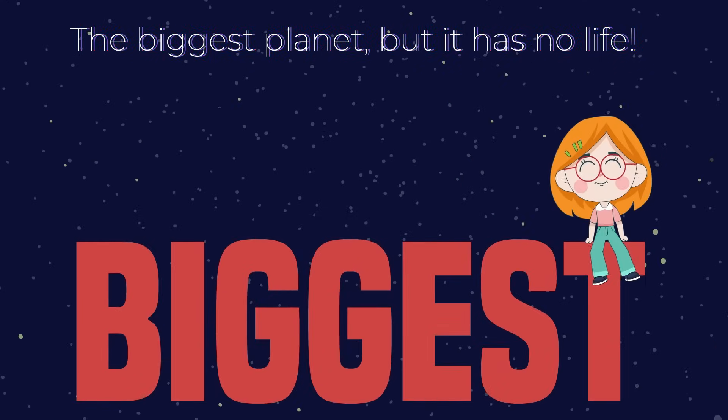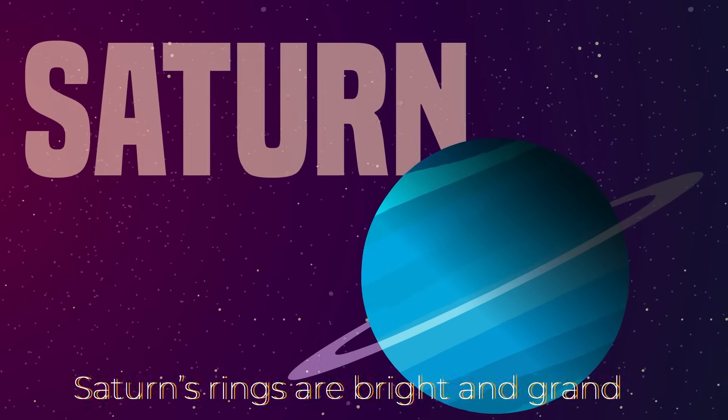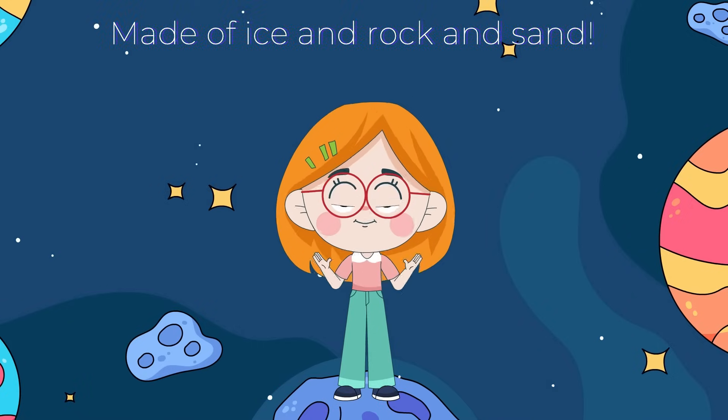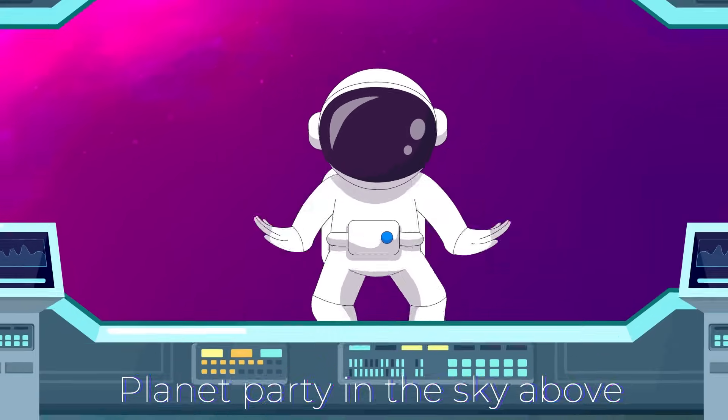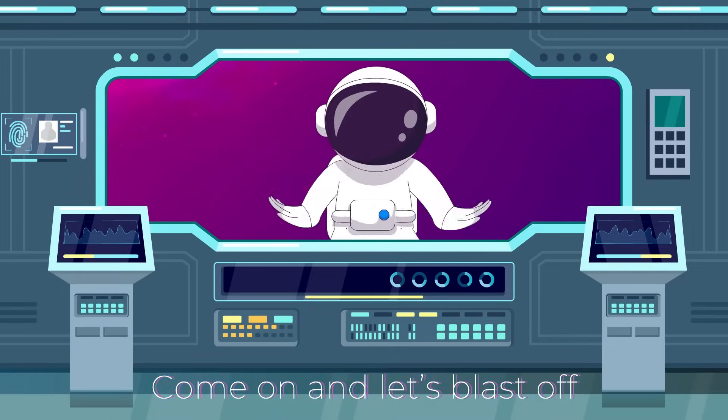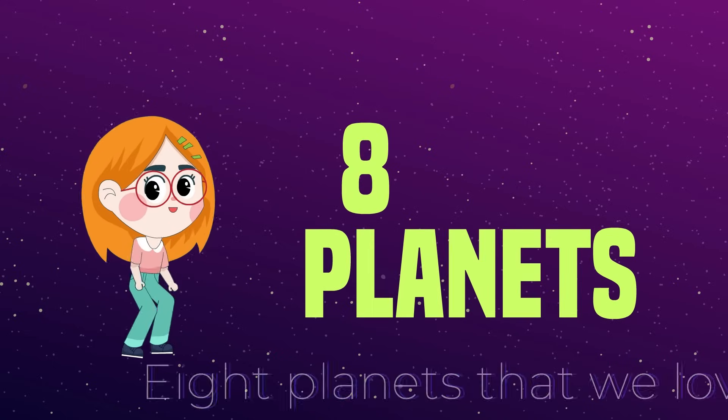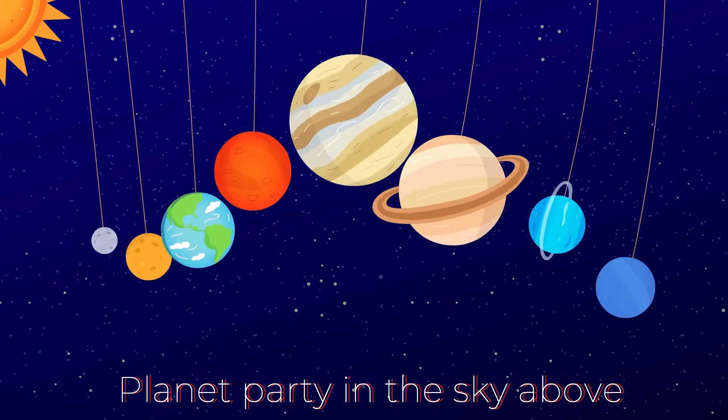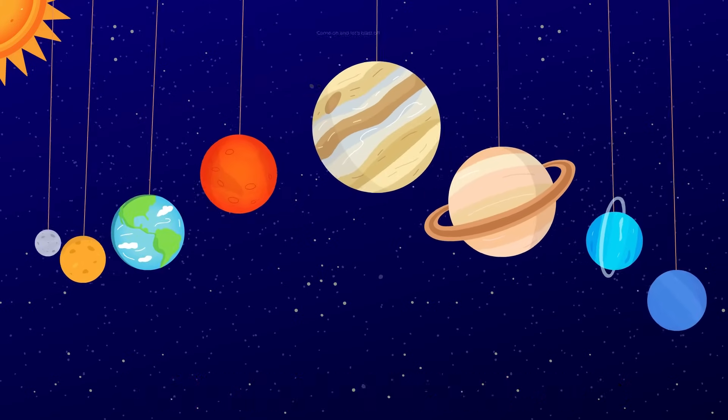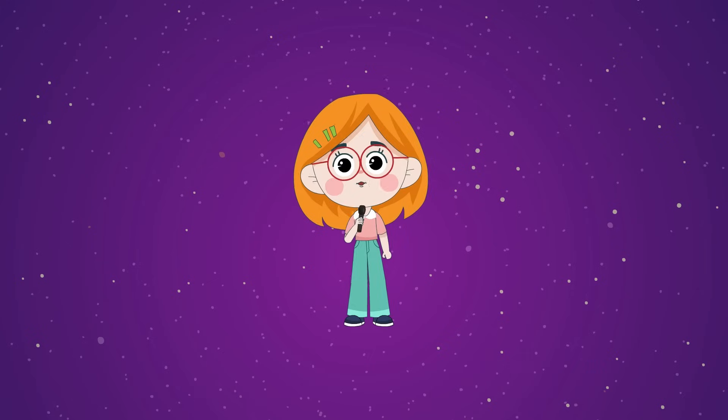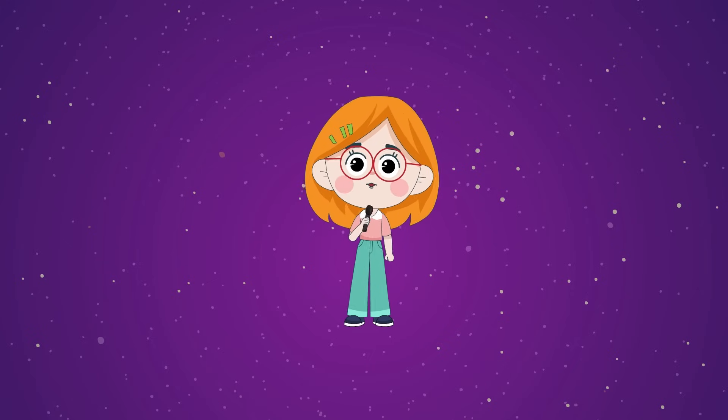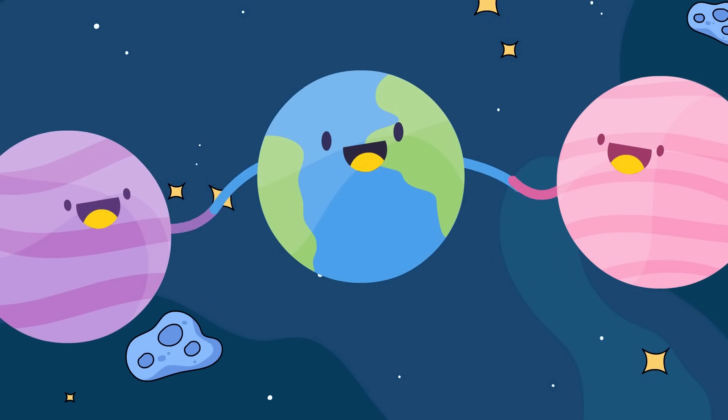Jupiter's a gas giant, it's number five, the biggest planet, but it has no life. Saturn's rings are bright and grand, made of ice and rocky sand. Planet party in the sky above, come on and let's blast off, eight planets that we love.